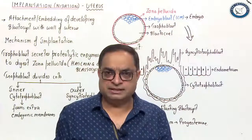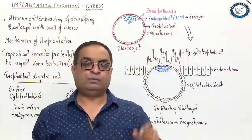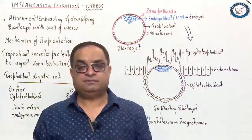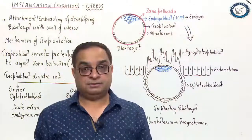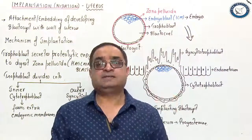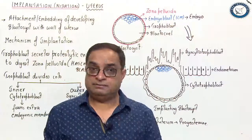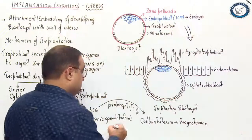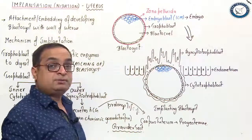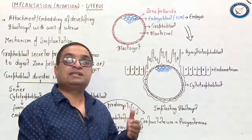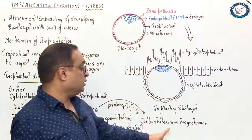Implantation begins 7 to 9 days after fertilization and is completed by the end of the 10th day with respect to fertilization. For example, in a 28-day cycle, if ovulation happens on day 14 and fertilization occurs by day 15, adding 10 days gives day 25 — by which implantation has occurred. HCG secretion then increases and gradually starts appearing in the urine of the female. Presence of HCG in the urine is a positive test for pregnancy, called the Gravidex test. This is a very sensitive test that can confirm pregnancy on the very first day of a missed menstrual period.